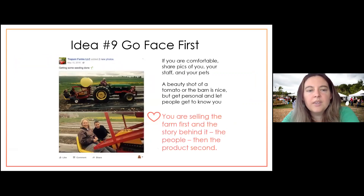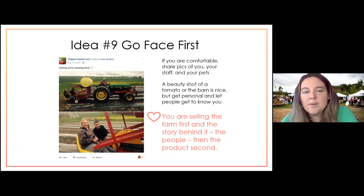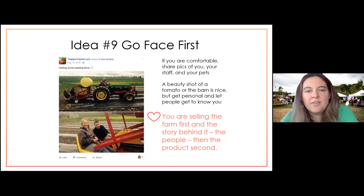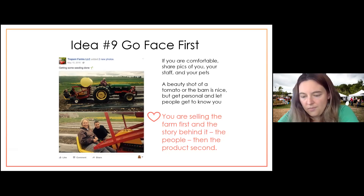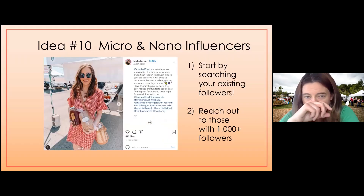For example, Trapani Farms — here they are working out in the field smiling, close up enough that you get the benefit of showing faces. I like this one because they have faraway pictures that give scale, but then you can see up close who these people are — the people you would see at market too.